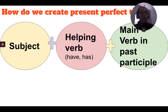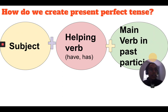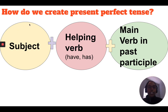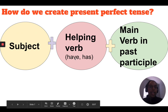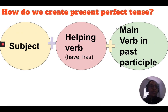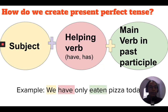So how do we create the present perfect tense? You're going to need a subject, then add a helping verb. The only helping verbs we're going to use for the present perfect tense are 'have' and 'has' — not am, are, may, or would. Then you add a main verb in the past participle. All of these things together create the present perfect tense. Let's take a look at an example.